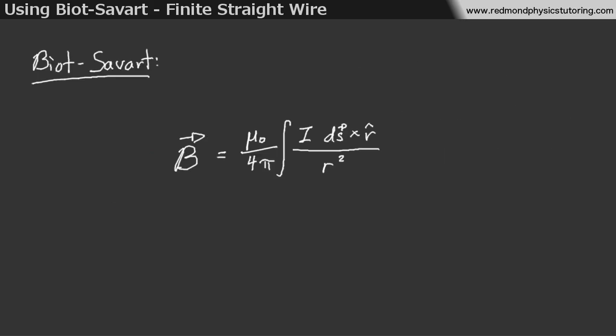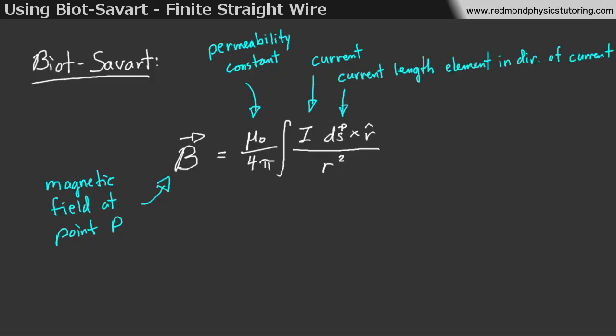First, we'll take a look at Biot-Savart and just understand all the different terms. So, B is the magnetic field at point P. That's what we're solving for. Mu-naught is the permeability constant. I is the current, and the current is going to be the same throughout the wire as we integrate along the wire, so we will be able to take that out of the integral. Then we have two vectors. We have dS, which is the current length element in the direction of the current, and r-hat, which is the direction from dS to point P.